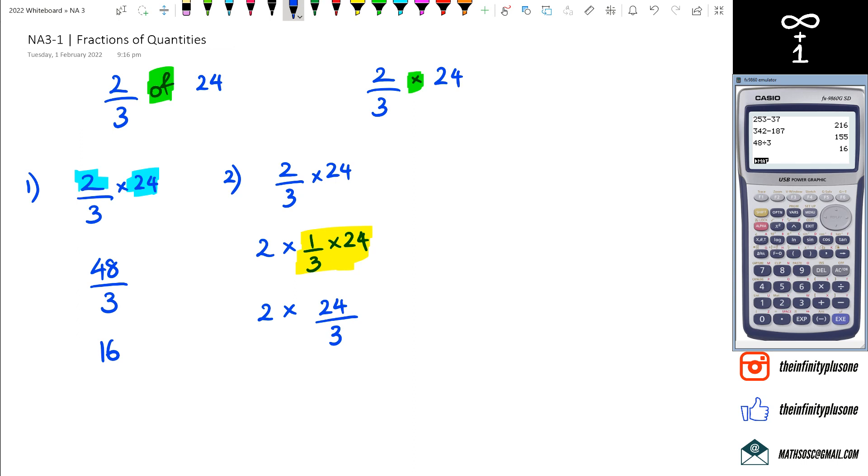24 divided by 3 - if you've been watching previous videos, you know you got to be good with your times tables. 24 divided by 3, you should know straight away: 8 times 3 is 24, which means 24 divided by 3 is 8. So we can rewrite this as 2 times 8, which equals 16. That's another way of doing this.